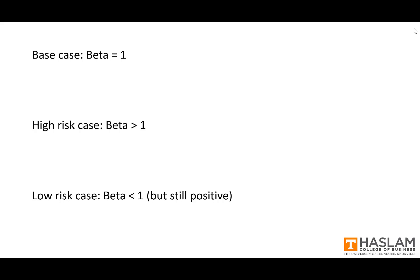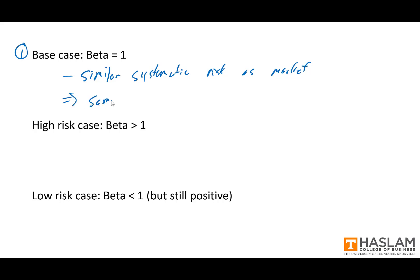Let's think about some specific values for beta. Starting with the base case where beta equals 1: this simply means that when the market is up, the stock is up by about the same amount, and when the market is down, the stock is down by about the same amount. The stock and the market move one-to-one with each other on average. In this case we would say the stock has a similar level of systematic risk as the market, and as such it should have the same expected return as the market.